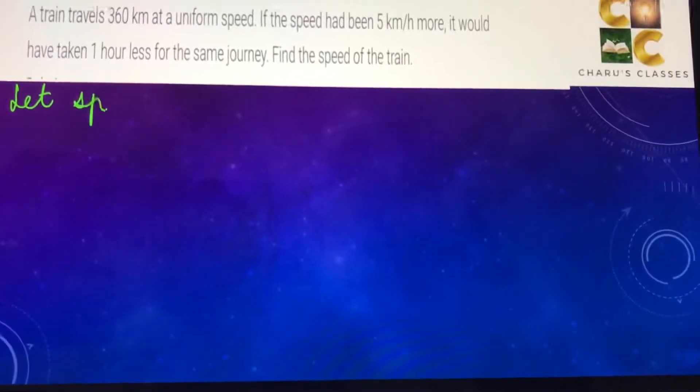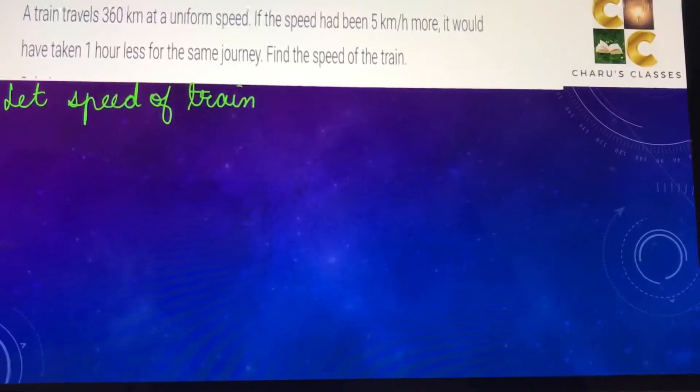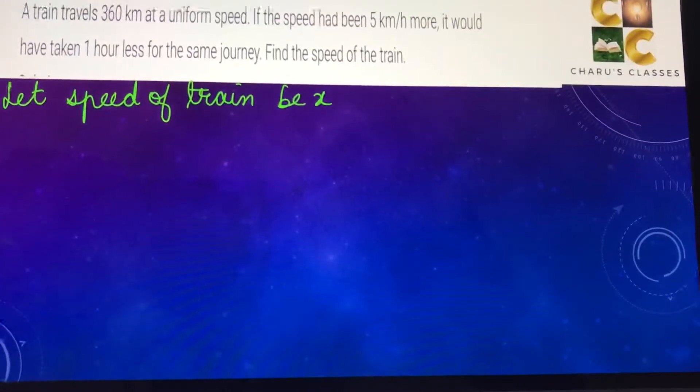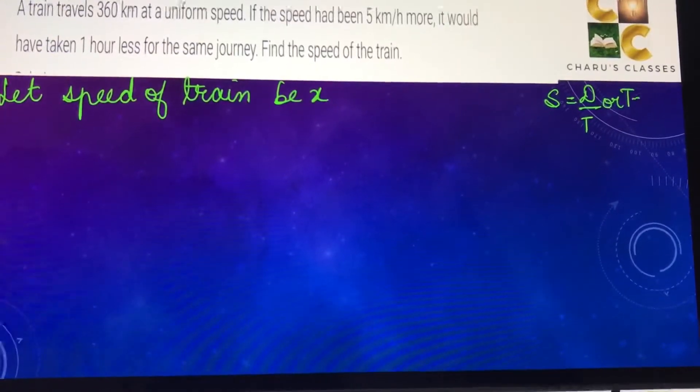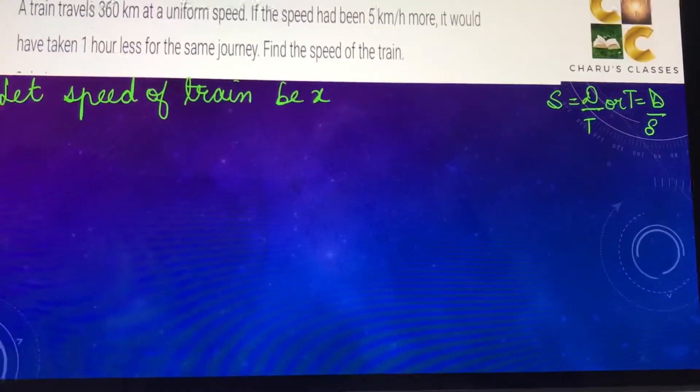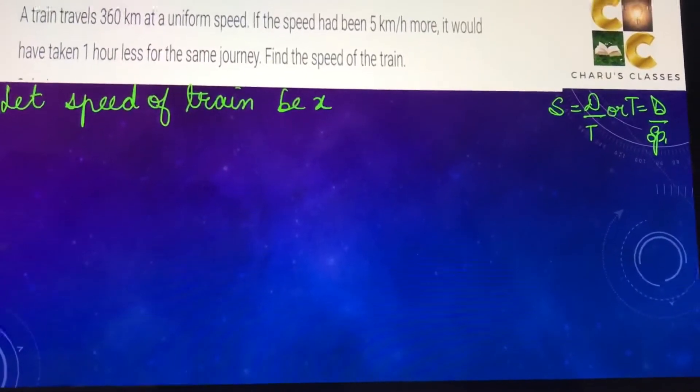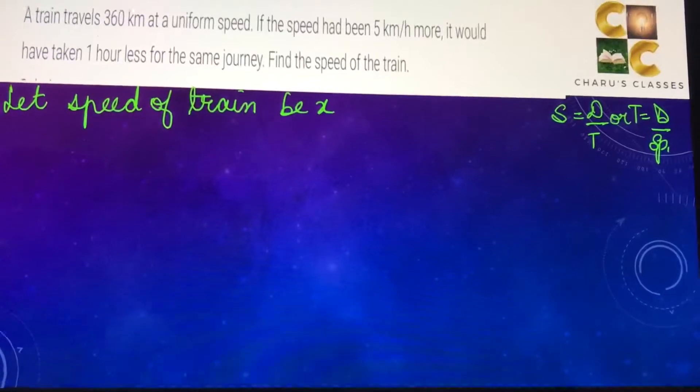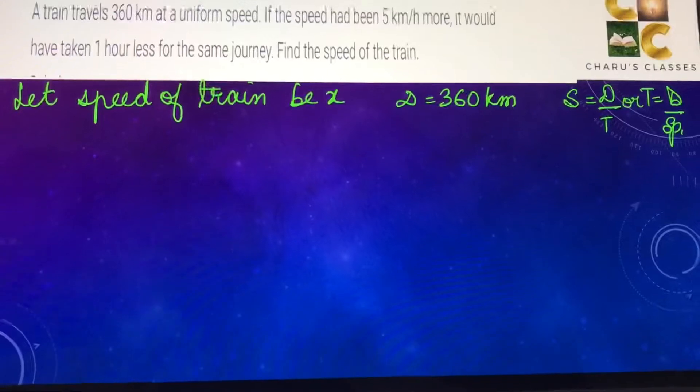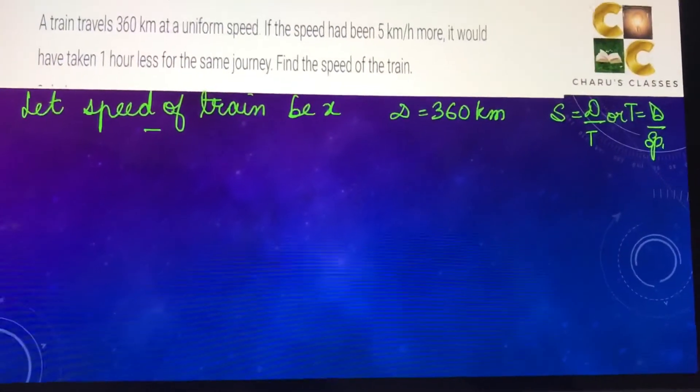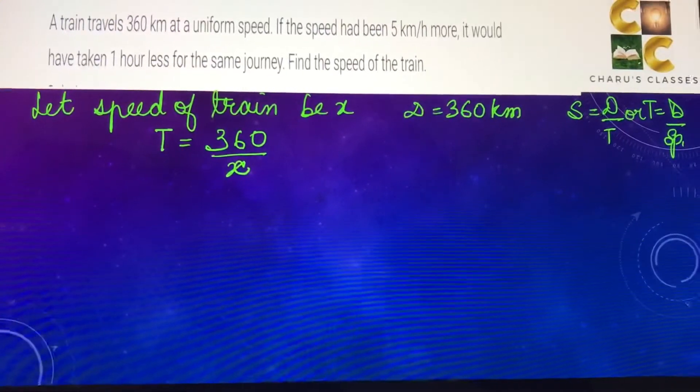Let the speed of the train be x. We already know that speed equals distance by time, or time can be written as distance by speed. In this case, the distance given is 360 km. So when the speed of train is x, then time = 360/x.